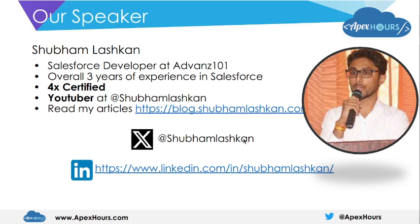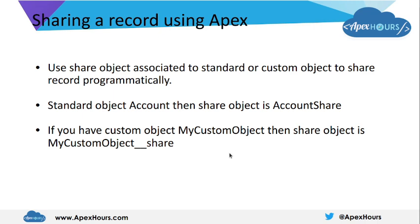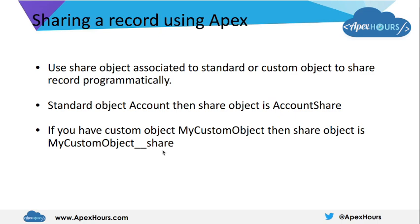Let's start with our topic — how to share a record using Apex. First, let's understand the share object in Apex. Whenever you need to share a record using Apex, you need to use the share object for that specific object. For example, if you want to share a record of the Account object, you create a record of AccountShare by setting some properties. For a custom object, you would use MyCustomObject__Share.